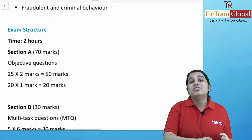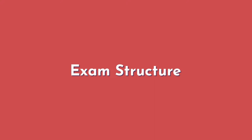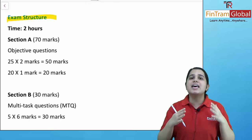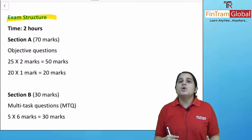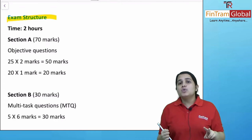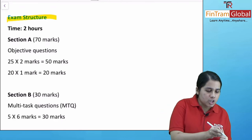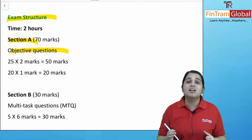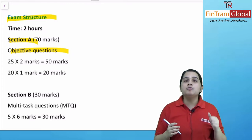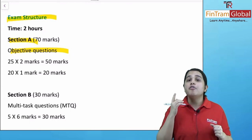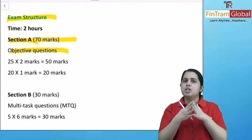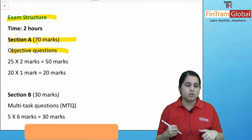Let's talk about the exam structure. Your exam for law is for 2 hours. This is an on-demand CBE exam which you will be giving for 2 hours. There are 2 sections. Section A consists of objective questions — here you will get 25 questions of 2 marks and 20 questions of 1 mark, making a total of 70 marks. These are your multiple choice questions, the normal MCQs.